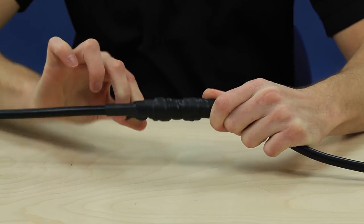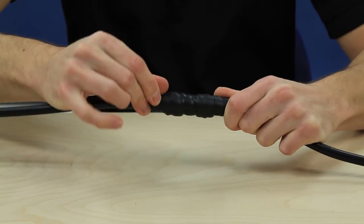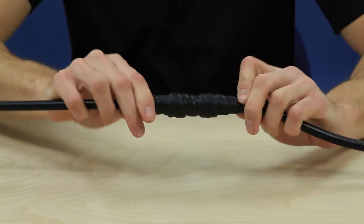Work your way up and over the cable connection until you have overlapped the connection at the top. Press the tape into place to seal everything together.